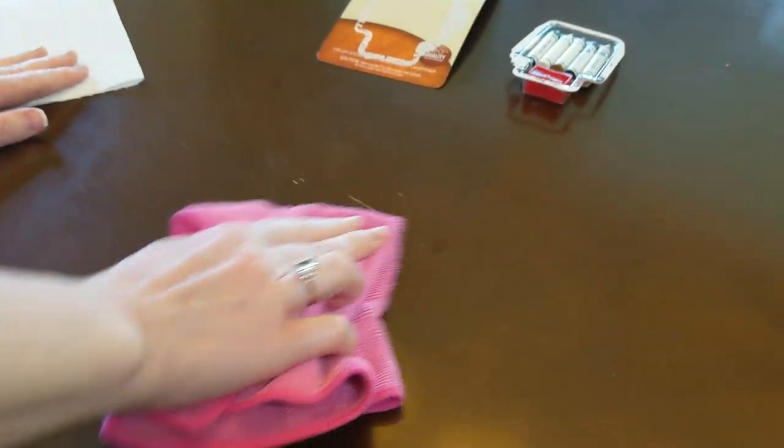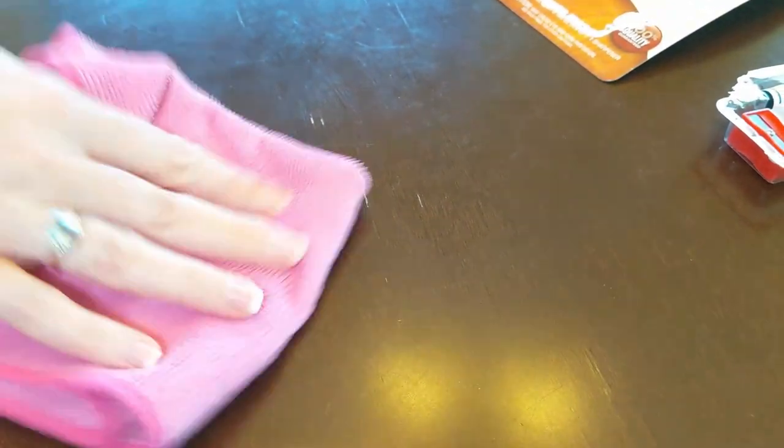First I recommend taking a damp microfiber cloth and rubbing and cleaning off the area where the scratch is. This is especially important if it's on a dining room table like it is here because you never know when food or other items have gotten into the scratch. And you can see the scratches, they're fairly deep so it's noticeable on the table.